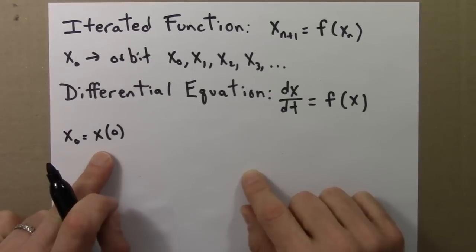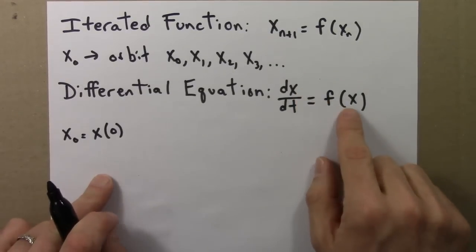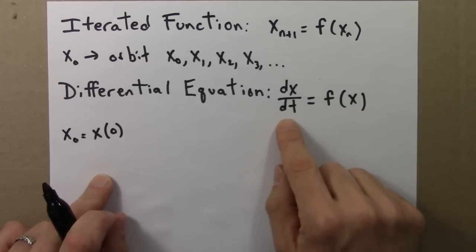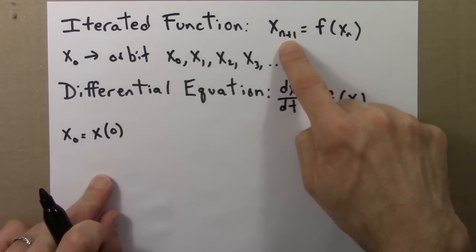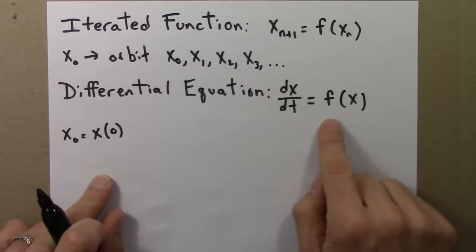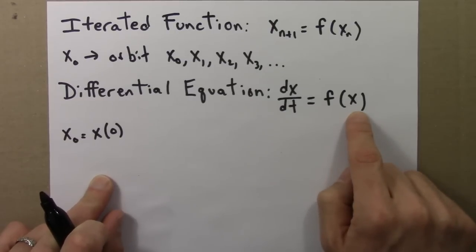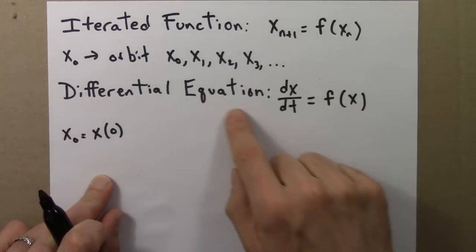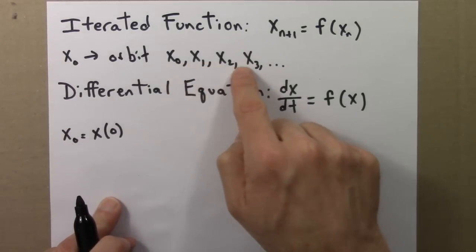So you need an initial value for this variable. And then this function tells you how the function changes. It doesn't give you this information quite as directly as here, where it just tells you the next value. Here, the differential equation is telling you how fast the function is changing at any given x. So the solution to a differential equation is not exactly a discrete orbit, but it's a continuous function.